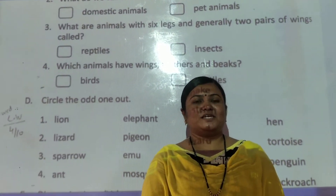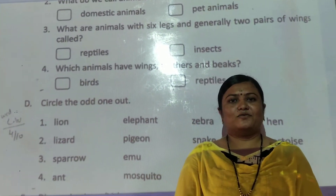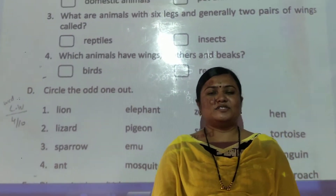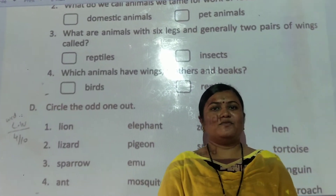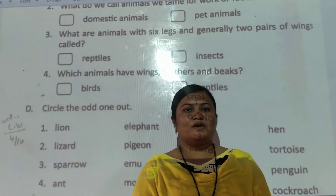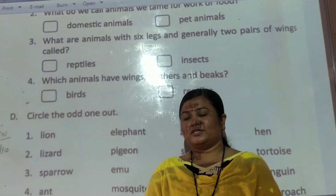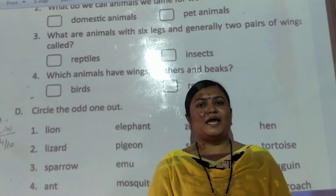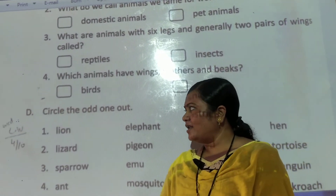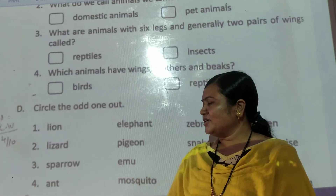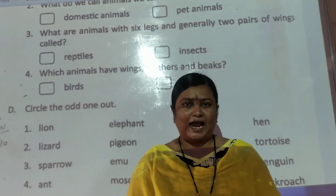Welcome to our LBS online class. Children, now we are learning question answer of chapter number 4, the animal world. In the previous video, we studied about question B and C. So today we are going to learn question D, animal activity.